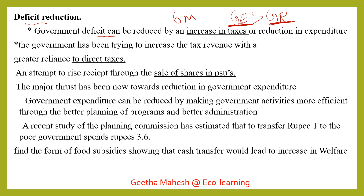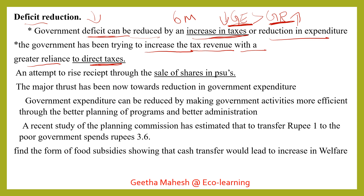The government will reduce this deficit. It will increase tax. Tax is working with respect to the expenditure. The government has tried to increase the tax revenue with a greater reliance on direct taxes. The tax revenue increase will be made by the importance of direct tax.